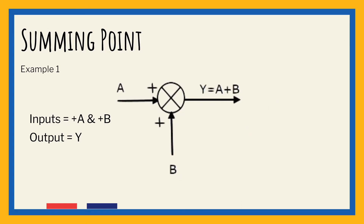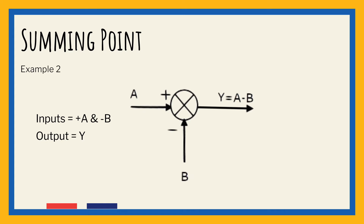The figure in example one shows the summing point with two inputs and one output. Here, inputs A and B have a positive sign, so the summing point produces the output Y as the sum of A and B. The figure in example two also shows the summing point with two inputs and one output. But in this figure, the inputs A and B have opposite signs — A is positive while B is negative — so the summing point produces the output Y as the difference of A and B.